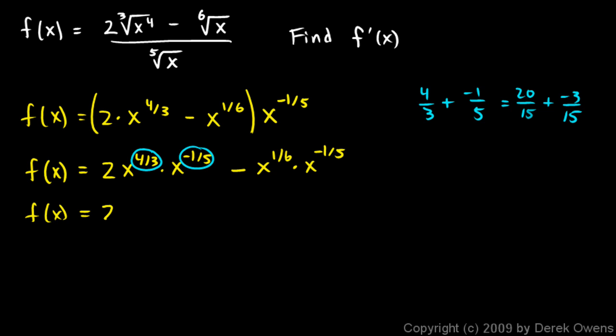Okay, so this is 2 times x to the power of 17 over 15. Then I have minus, and then I need to add the 1 sixth and the negative 1 fifth. Okay, let's do that. 1 sixth, we'll just say 1 sixth minus 1 fifth. Well, 1 sixth is 5 thirtieths minus 6 thirtieths is negative 1 thirtieth. So this is x to the negative 1 over 30.